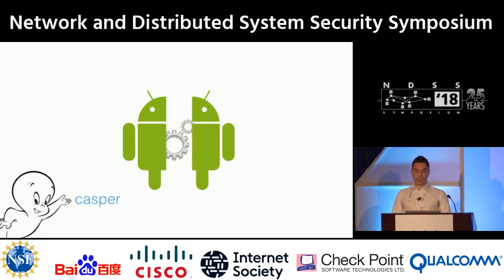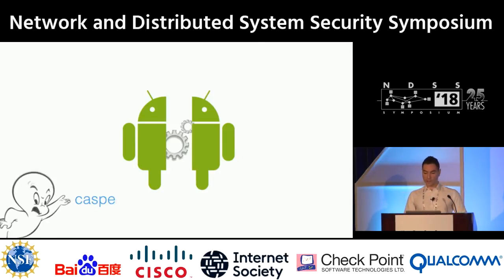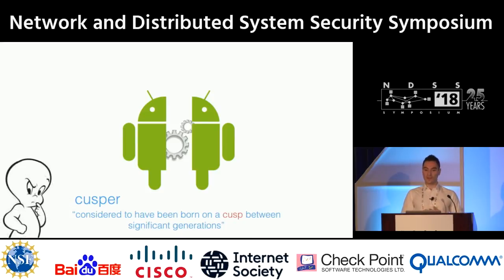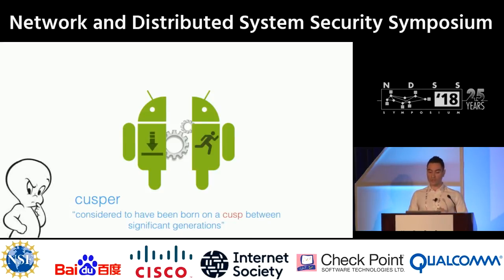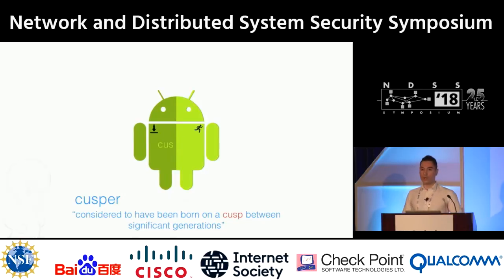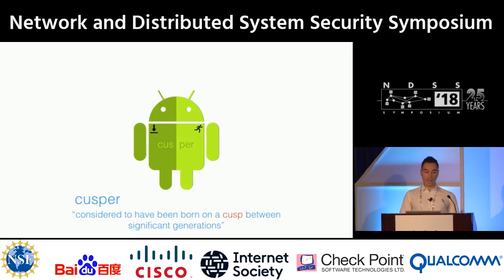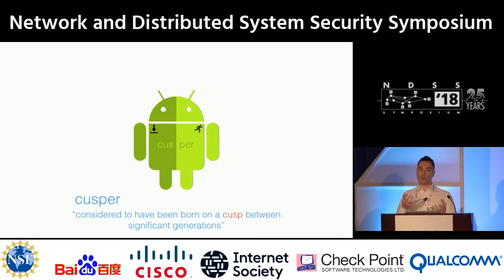Our system is called Casper, which is not inspired by the friendly ghost, but actually comes from the definition of the word 'casper' with a U — something that was born in the cusp of two significant generations. This is to highlight the fact that our system was implemented at the time we were transitioning from the install-time permission model to the runtime permission model.